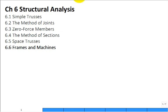Now we move into frames and machines. It's essentially beyond trusses. Trusses were pin-connected two-force members. Frames and machines are also pin-connected, but we go beyond two-force members — you can have three-force members or more. Just like a truss with many components, a frame or machine can have multiple parts.